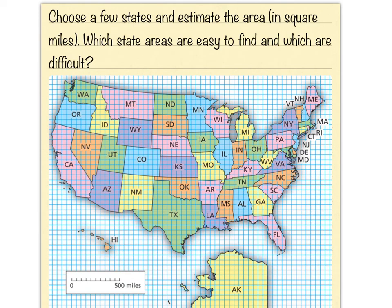This is section 8.4, Areas of Composite Figures. There's a map of the United States on grid paper. Looking at the key, the distance from zero to 500 miles spans ten squares, so each square is about 50 miles. Therefore, 50 times 50 equals 2,500, so each little square represents 2,500 square miles.